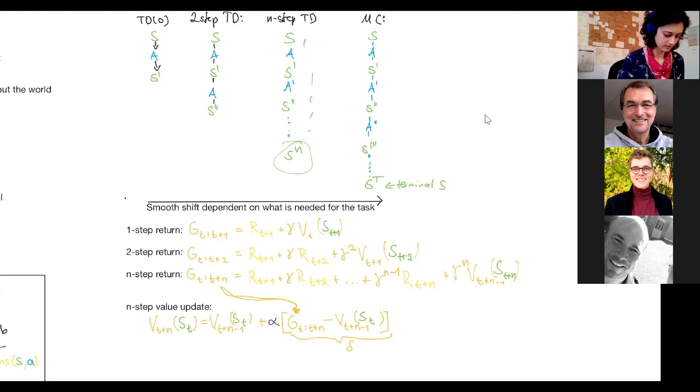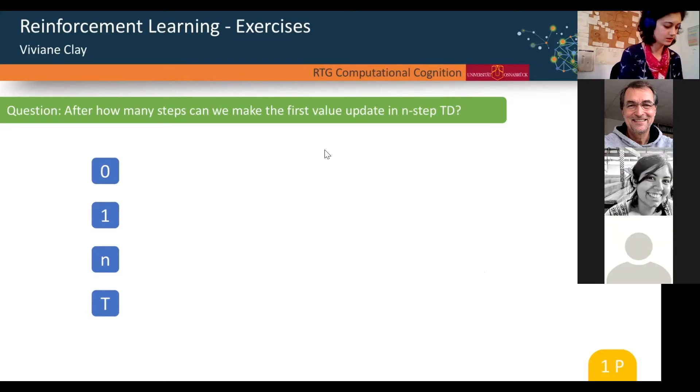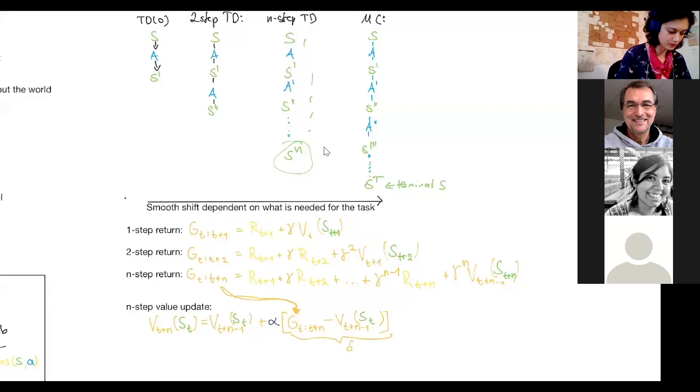I wrote down that I have an exercise here. After how many steps can we make the first value update in n-step TD? Those are four options: 0, 1, n, or t is the terminal state. This should just take one minute, decide for one answer and then come back here. So the answer to the question is n. If you got it right, give yourself a point.